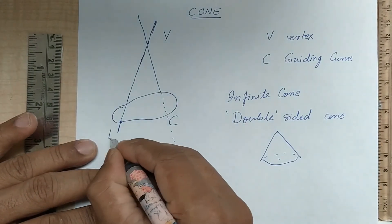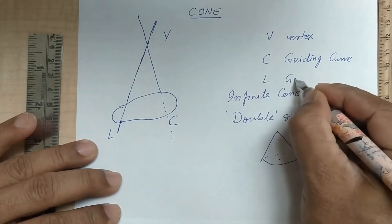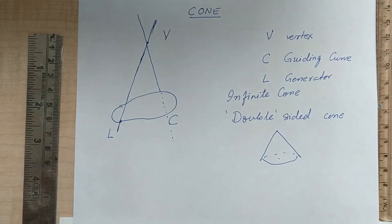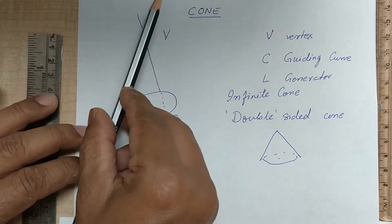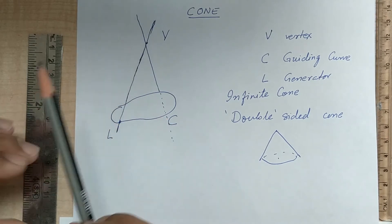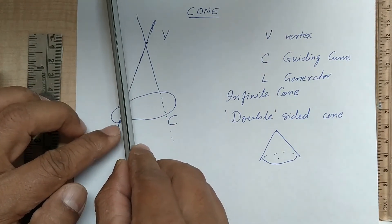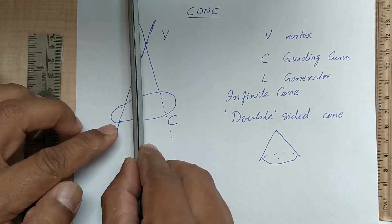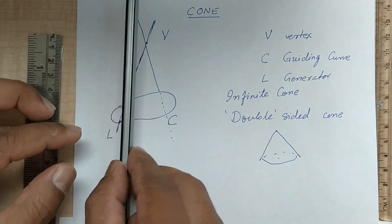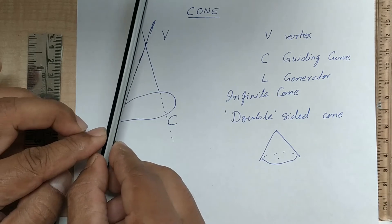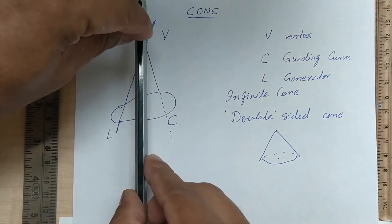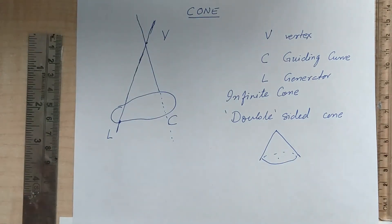Any line of this kind is given a name — it is called a generator. You can think of the line L moving in such a way that it always passes through vertex V and also through another point on the curve, moving along the curve while always passing through the vertex V. So it is called the generator.